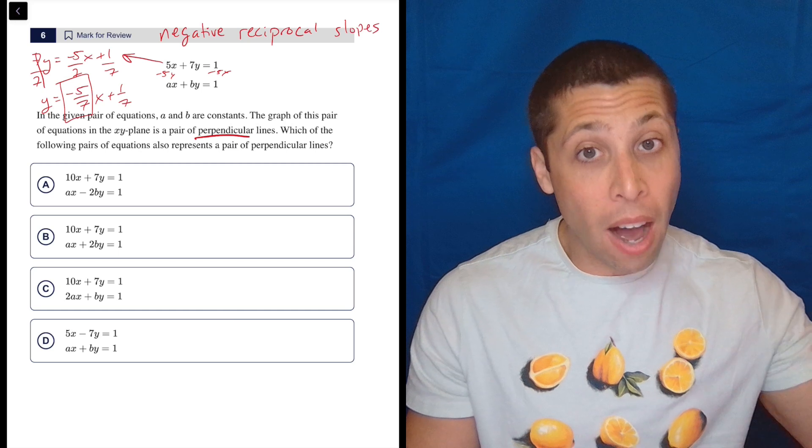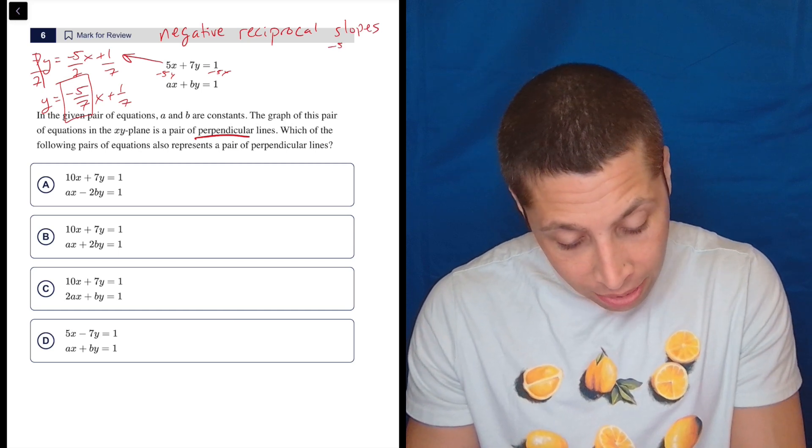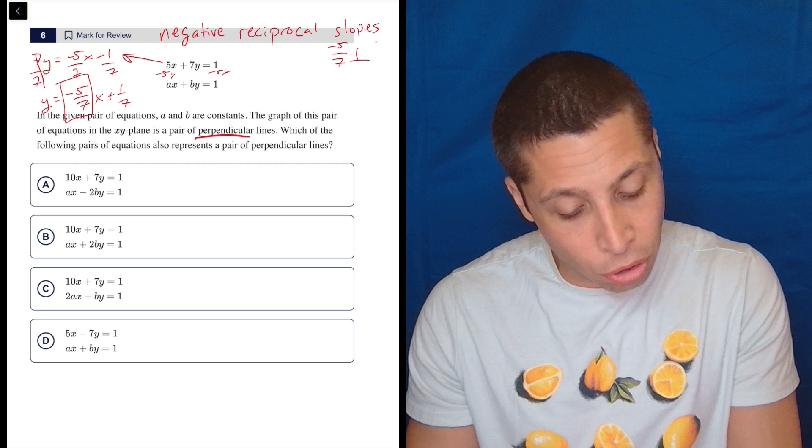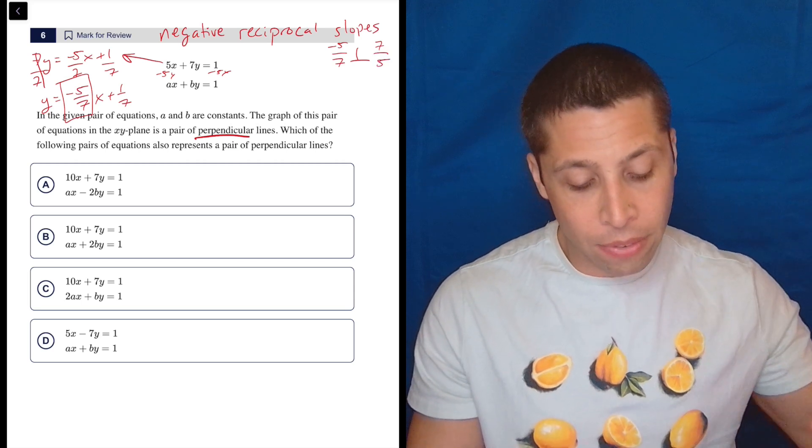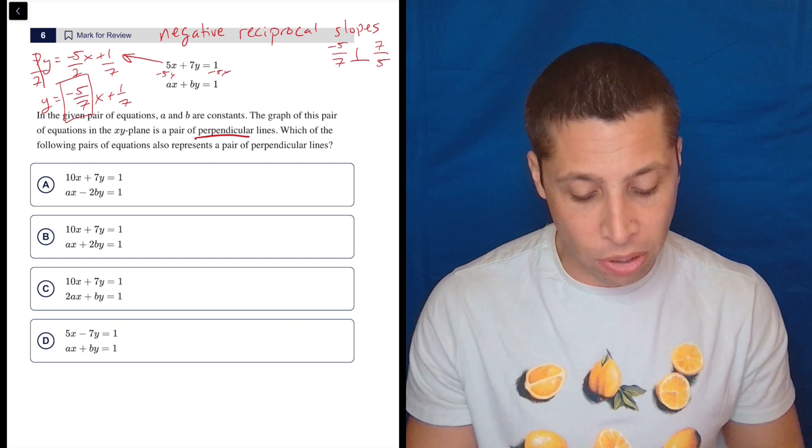That means the slope of the other line is going to be, let's put it over here, negative 5 7ths is going to be perpendicular to flip it and reverse it. So it was negative, now it's positive. It was 5 over 7, now it's 7 over 5. That's what we mean by negative reciprocals.